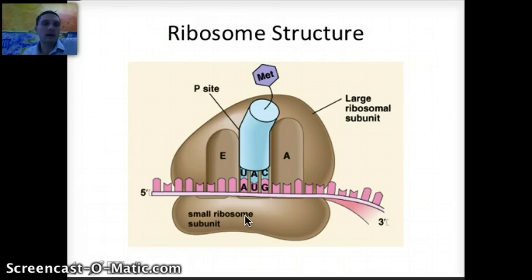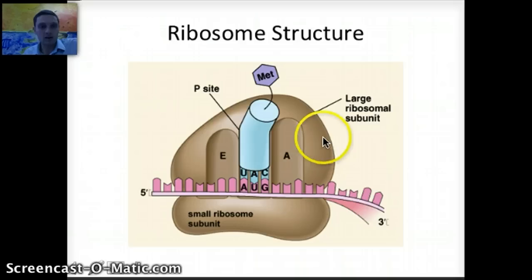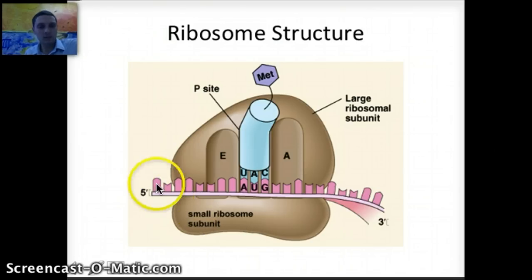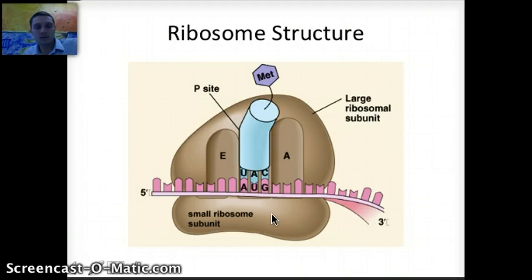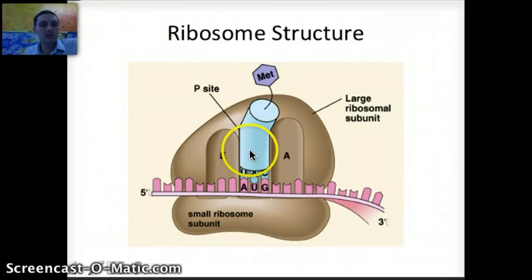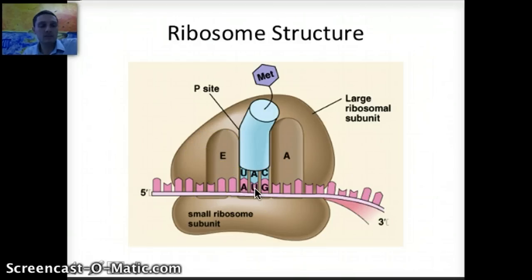The ribosome is made of ribosomal RNA (rRNA) and proteins, and has two parts: a small subunit and a large subunit. These two pieces are separated at first, and when translation begins they come together and connect with the messenger RNA — which binds to the small ribosomal subunit. Within the large subunit, there are three sites where transfer RNAs can connect: the A site, the P site, and the E site. The P site is where amino acids bond to one another, and the E site is where they are discharged.